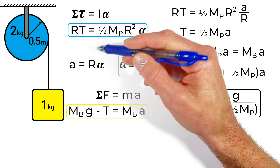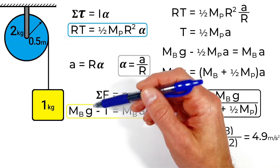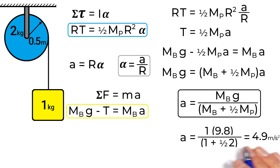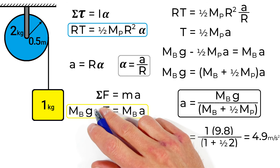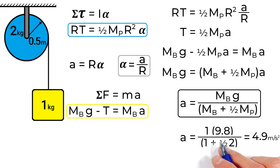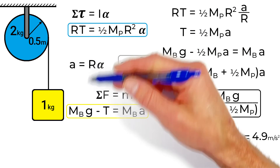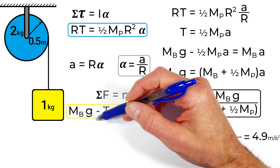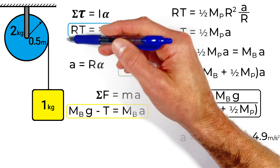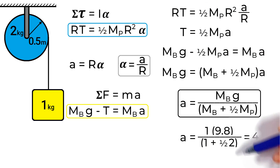Plugging in the numbers given in the problem, we find the linear acceleration of this block as it accelerates downward is 4.9 meters per second squared. This has been how to solve for the acceleration of a block connected to a pulley that has mass. I hope you found this useful.